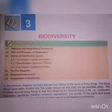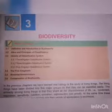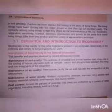Biodiversity. Bio means life and diversity means variety. The variety of life on earth is known as biodiversity. As we know that biology is the study of living things. The living things are divided into five major groups so they can be identified easily. There are similarities and differences among them, on the basis of their characteristics.